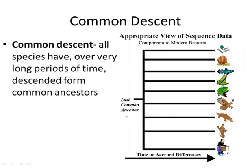This also brings us to the idea of common descent — that all species have, over long periods of time, descended from common ancestors. That means that really all of us are related because we are all derived from ancestor species.